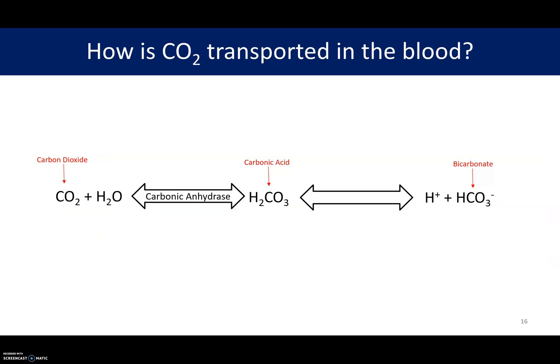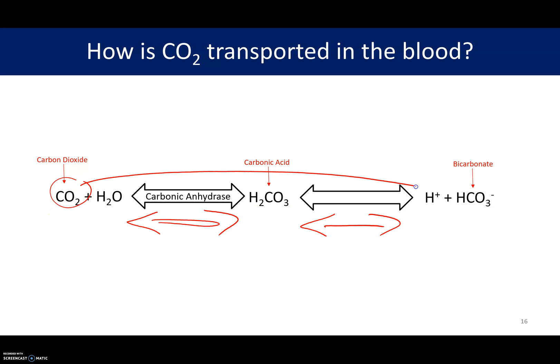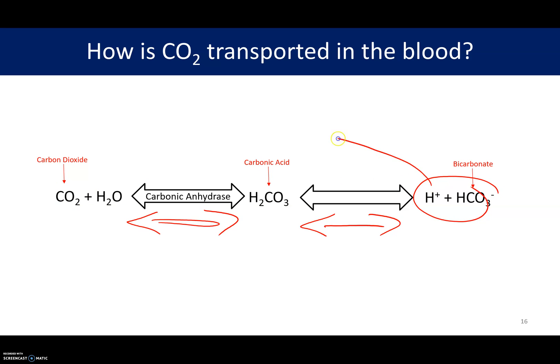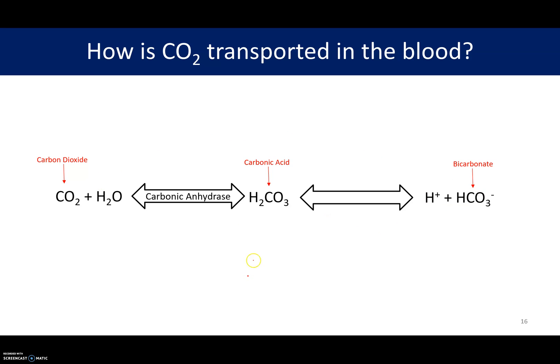The bicarbonate buffer system is by far the most important way of transporting CO2 in your blood and throughout your body. In this bicarbonate buffer system we have two reversible reactions — notice that the arrows point both ways. That means if you have a lot of CO2 it will drive the formation of acid and bicarbonate. If you have a lot of bicarbonate or acid it will cause the formation of these things — they equalize out. You could almost think of it as these things being on a scale.